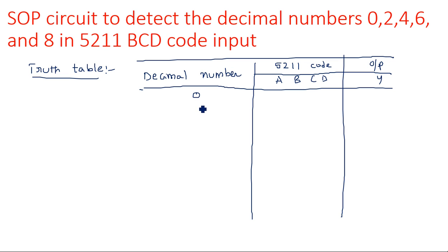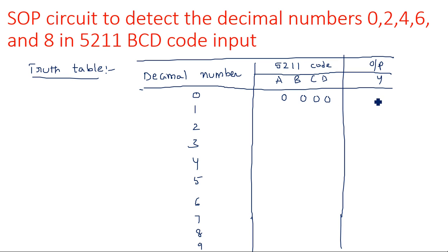The decimal numbers 0 through 9 are listed. Decimal 0 is represented as 0000. Decimal 1 in 5-2-1-1 can be represented as 0001. Decimal 2 can be represented as 0100 or 0011 — either representation is valid and will give output 1.